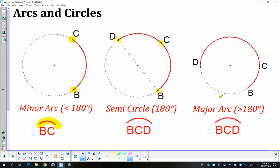And the last type of arc we can talk about is a major arc. So a major arc is larger than 180 and it's also less than 360, because 360 is the whole circle. So to name a major arc, we're also going to need three letters.